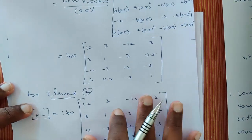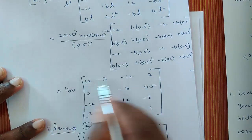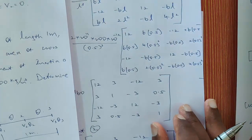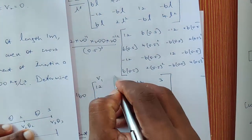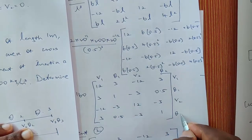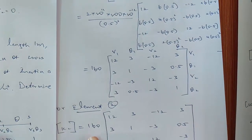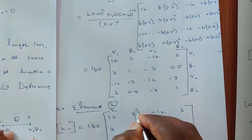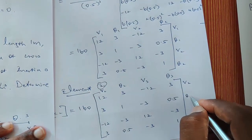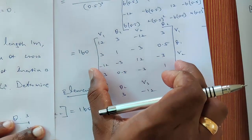To simplify the assembly, we must number the stiffness matrix. Element 1 has 4 degrees of freedom: V1, θ1, V2, θ2. Element 2 has V2, θ2, V3, θ3. So in the stiffness matrix for element 2, we label the rows and columns as V2, θ2, V3, θ3. Now we have calculated the stiffness matrix for element 1 and element 2. The next step is to assemble the stiffness matrix.